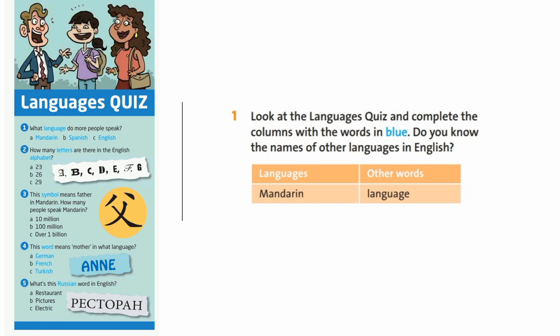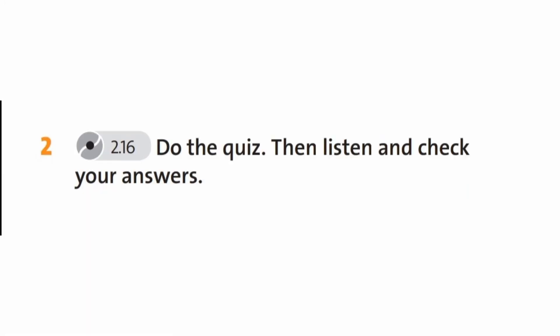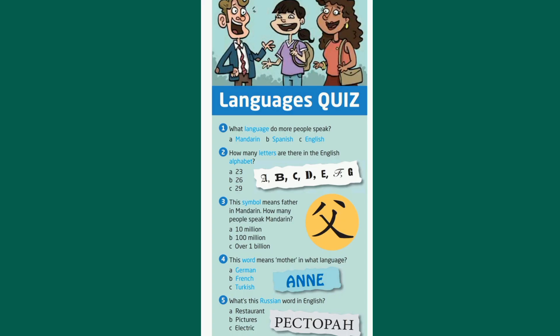Давай с тобой выполним упражнение номер один. Посмотри на викторину «Языки» и дополни таблицу словами, выделенными голубым цветом в викторине. Знаешь ли ты названия других языков на английском? Выполни викторину, затем послушай и проверь свои ответы. Track 2.16.